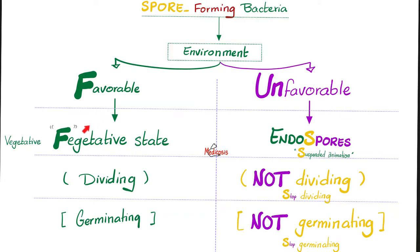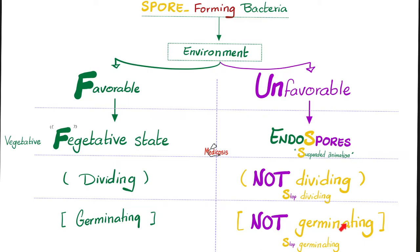When the environment is favorable, the bacteria is in the vegetative state — dividing and germinating actively. That's why spermatogonia and oogonia are known as germ cells, because they divide like crazy. But during unfavorable conditions, when there is no food or nutrition around, the bacteria will surround itself with a spore known as an endospore. The bacteria is not dividing — it is in a state of suspended animation, frozen, not germinating.